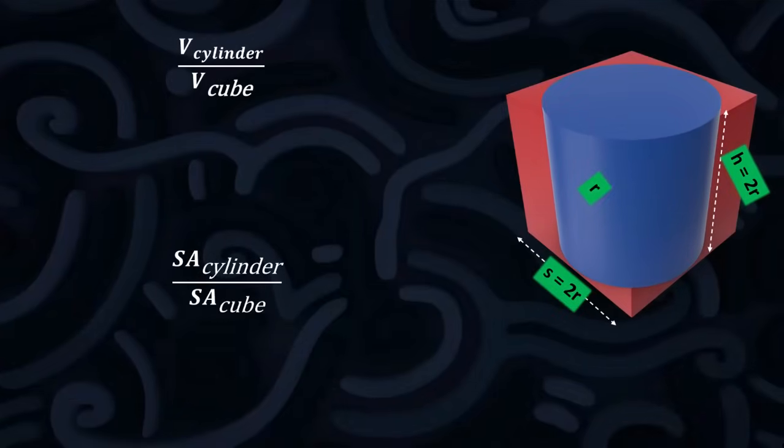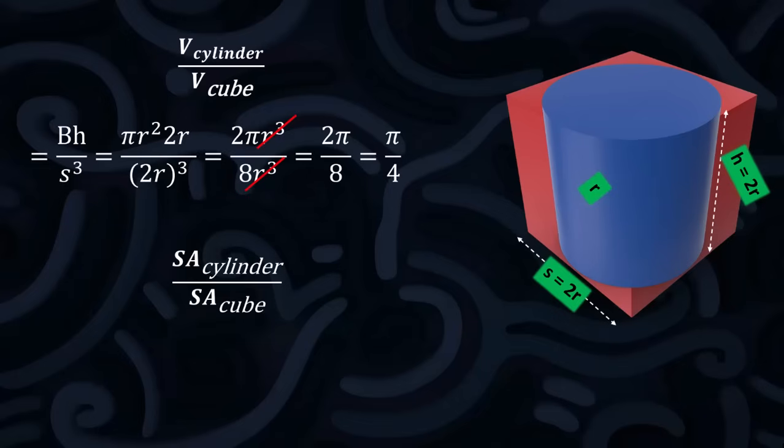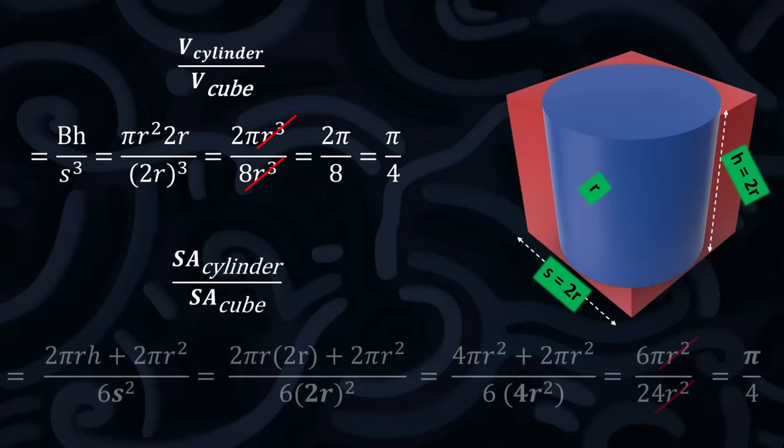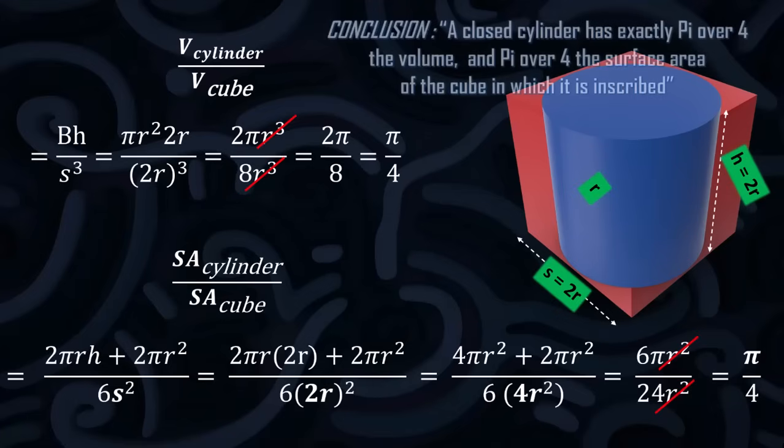Now let's do the proof for the cylinder and the cube. And it's pi over 4. And the surface area of the cylinder and the cube? Pi over 4. A closed cylinder has exactly pi over 4 the volume, and pi over 4 the surface area of the cube in which it is inscribed.